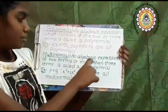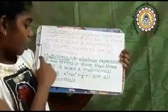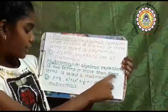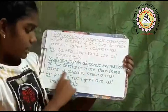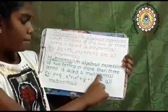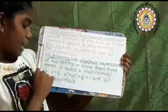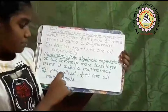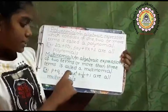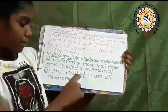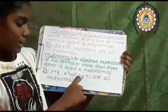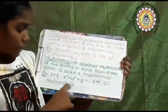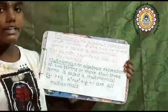Multinomial: an algebraic expression of two terms or more than three terms is called a multinomial. Example: p plus q, x power 4 plus 2x cube plus 1 by x plus 1 are all multinomials. Thank you.